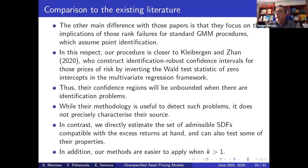The Kleibergen and Zhan approach, like all identification-robust confidence interval approaches, is fairly straightforward when you have only one risk factor, but becomes numerically more complex when you have more than one factor.